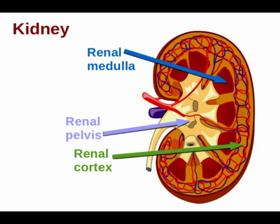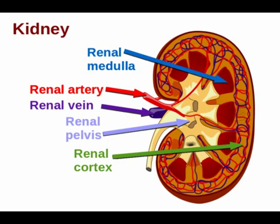You can also see the renal artery, which brings in oxygenated blood, including the blood that is going to be cleansed by the kidney, and the renal vein, which takes away the deoxygenated and cleansed blood. Each kidney also connects to the ureter, which takes away waste to be stored in the bladder.